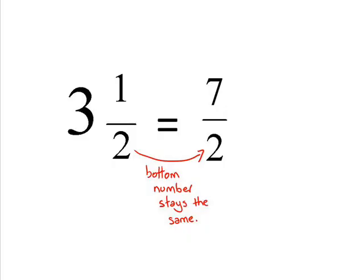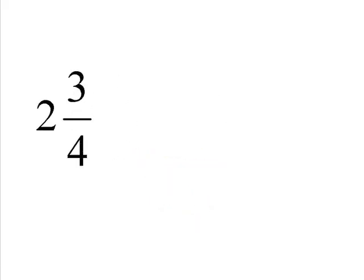I'll show you another example: 2 and 3 quarters. We'll change this into an improper fraction. So the first thing we do is we times the 2 and the 4 to get 8.